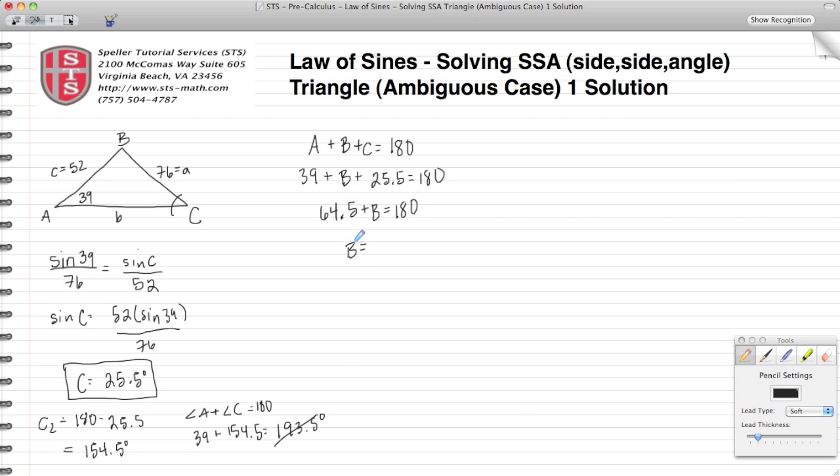we see that angle B is 115.5. Let's add that to our drawing here—115.5—and let's also add C, which I said was 25.5. That leaves us trying to find the measure or the length of side B.